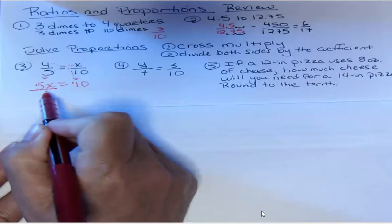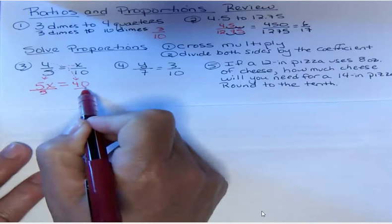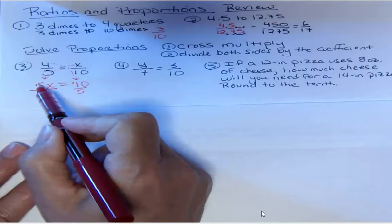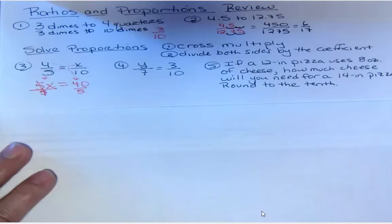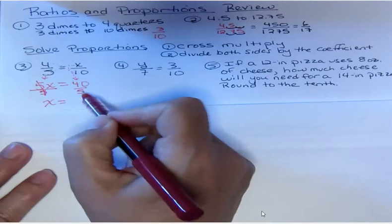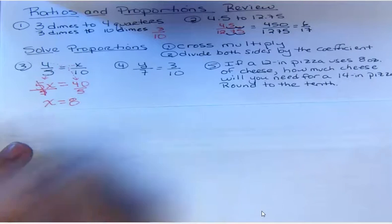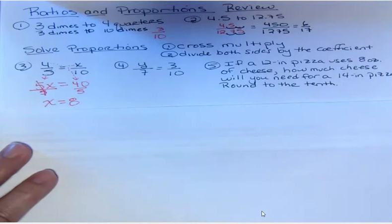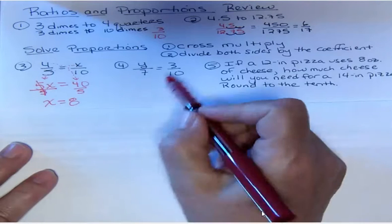So I'm going to divide both sides by 5. Why am I doing that? Well, 5 over 5 will cancel out to 1, which is what I want, and then the other side 40 divided by 5 is 8. So in two steps I got that answer. I cross multiplied and then I divided by the coefficient.